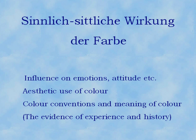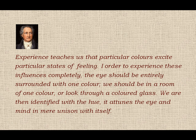Finally, we come to the chapter which Goethe called Sinnlich-sittliche Wirkung der Farbe, where emotional and aesthetic effects of color are treated, as well as color conventions and the use of color in art. Experience teaches us that particular colors excite particular states of feeling. In order to experience these influences completely, the eye should be entirely surrounded with one color — we should be in a room of one color, or look through a colored glass. We are then identified with the hue; it attunes the eye and mind in mere unison with itself.